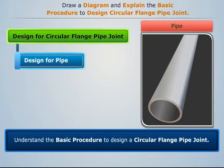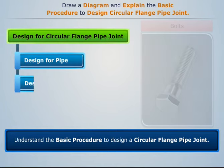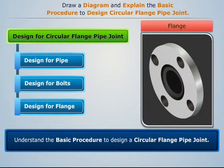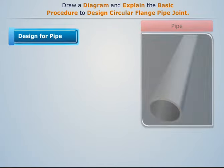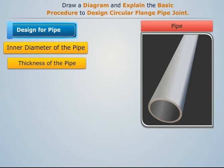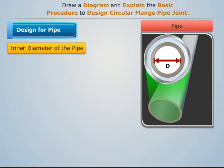The design of a circular flange pipe joint involves: design for pipe, design for bolts, and design for flange. Let's understand each one by one. For the pipe, we need to determine the inner diameter of the pipe and the thickness of the pipe. Let's first determine the inner diameter.